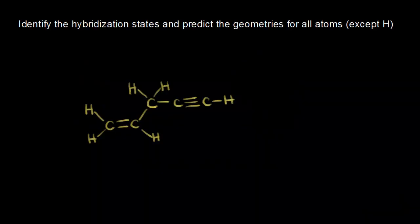Now that we understand hybridization states, let's do a couple of examples. We're going to identify the hybridization states and predict the geometries for all the atoms in this molecule except for hydrogen.